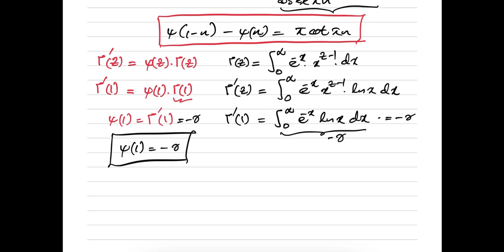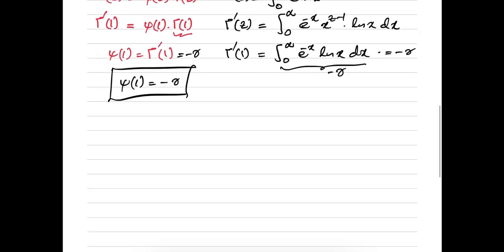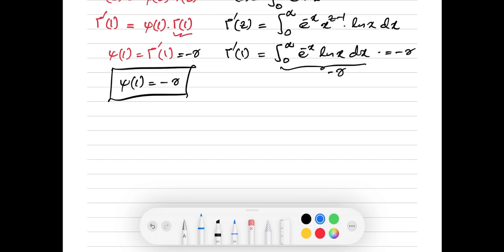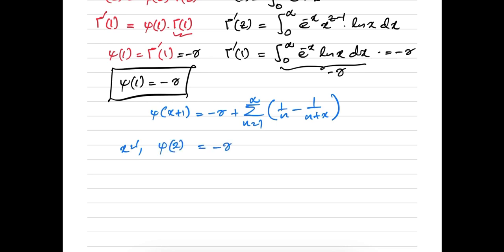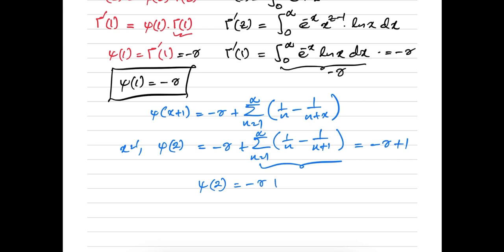Then I am going to find the value of ψ(2) using the series representation of the digamma function: ψ(x+1) = -γ + Σ (1/n - 1/(n+x)) from n=1 to ∞. When x = 1, ψ(2) = -γ + Σ (1/n - 1/(n+1)), which is a telescoping series equal to 1. So ψ(2) = -γ + 1.